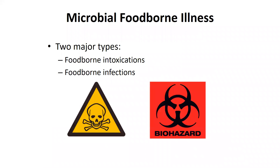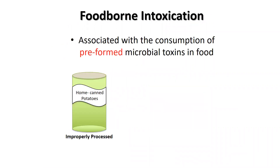There are two major classifications of foodborne illness caused by microorganisms: foodborne intoxications and foodborne infections. Foodborne intoxications are caused by the consumption of toxin produced by bacterial growth in food. In this case, the toxins are already present in the food, and it is the ingestion of that preformed toxin in food — not the bacteria — that leads to illness.